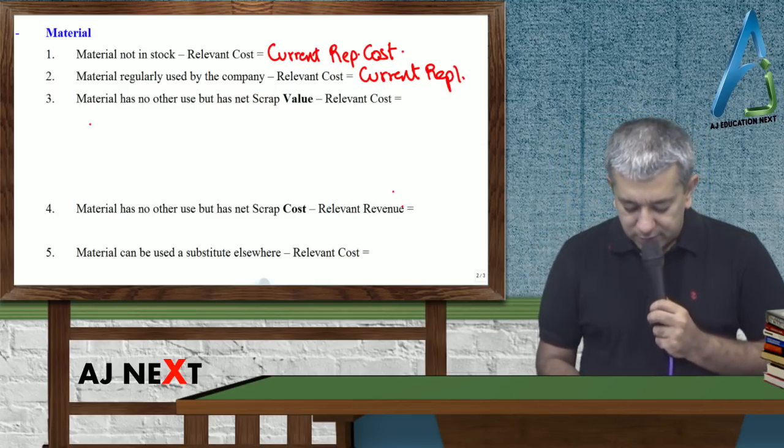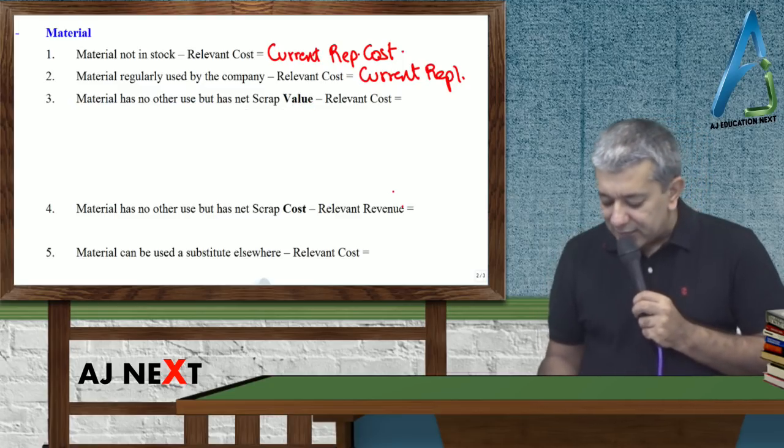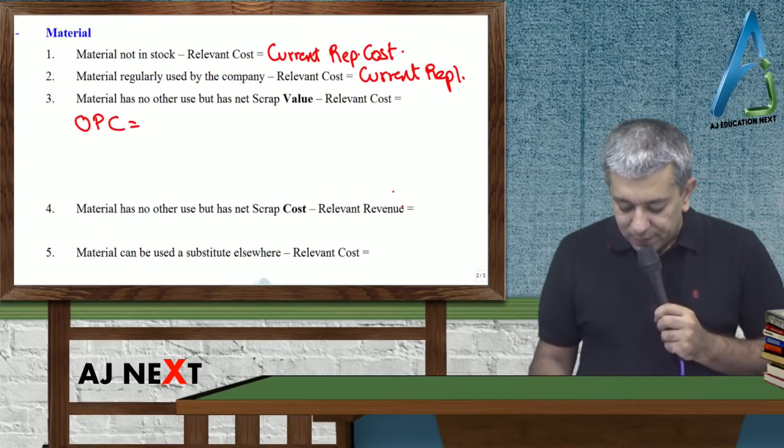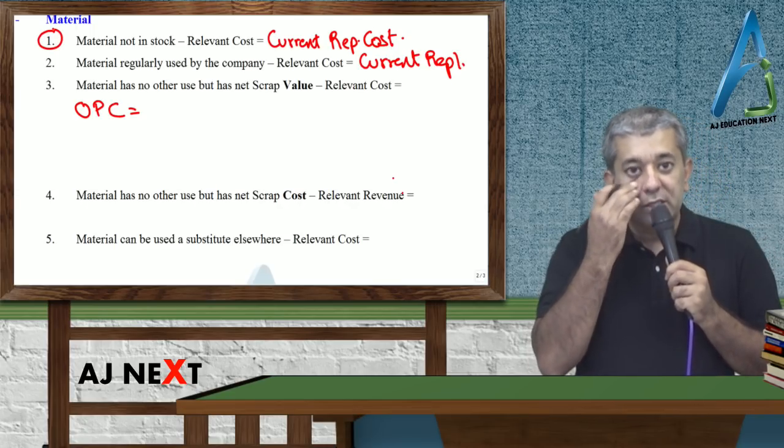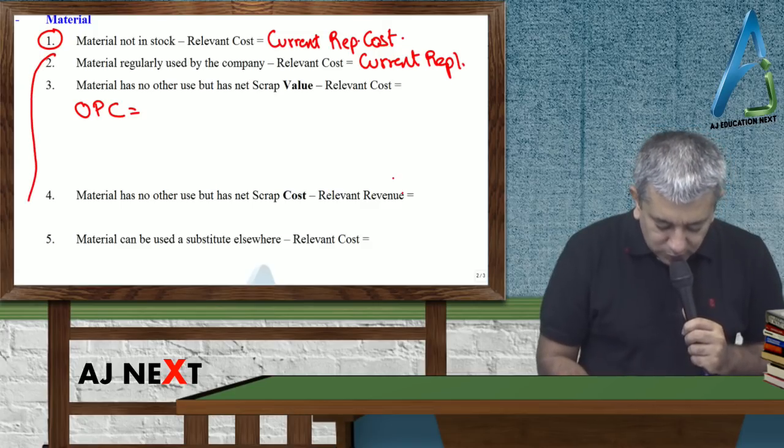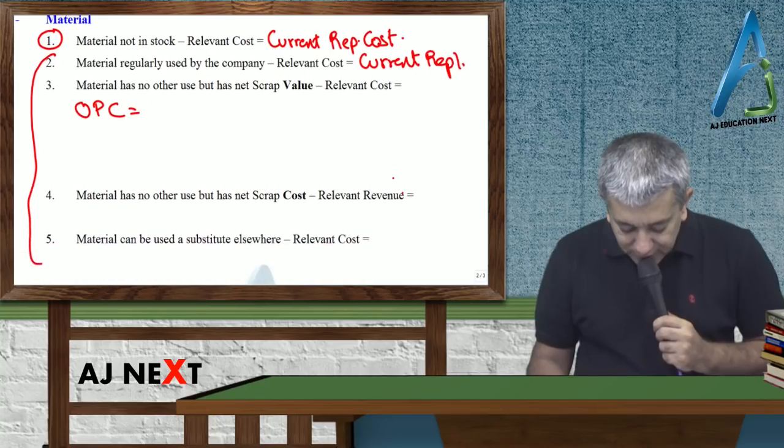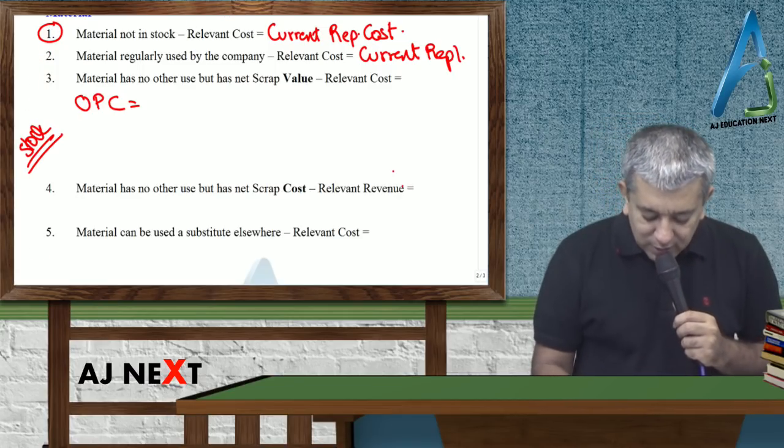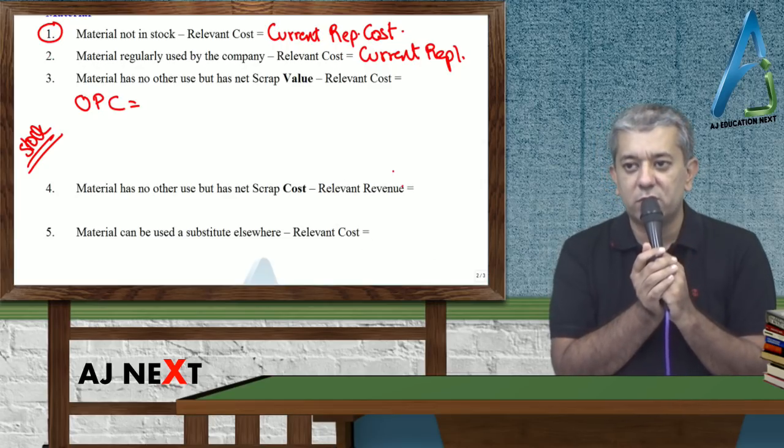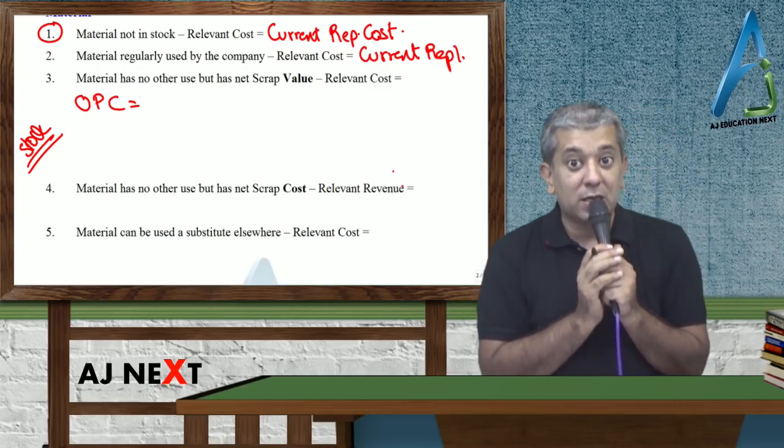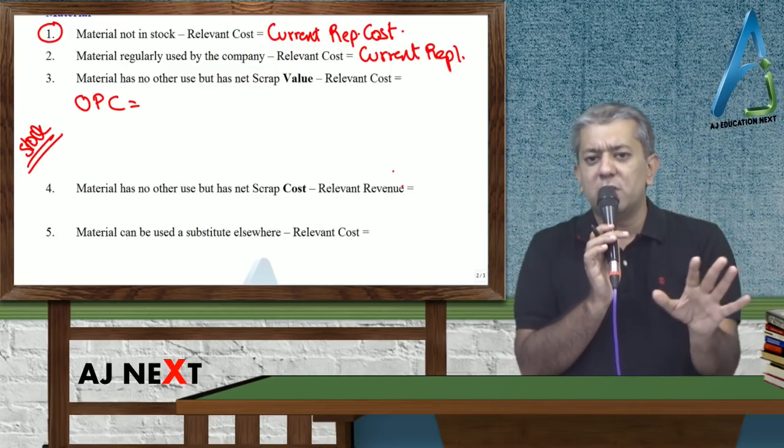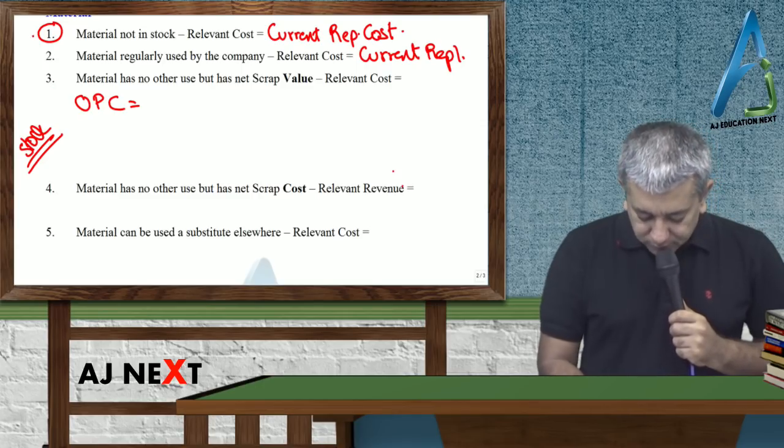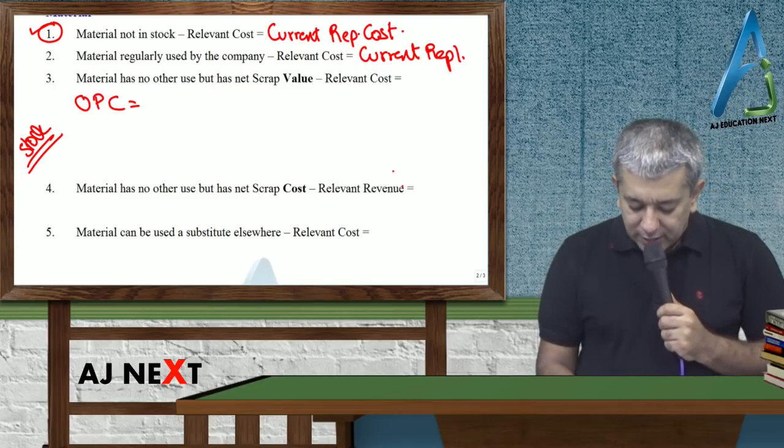Third, material has got no other use but has net scrap value. Now let me take some numbers. I'll give you three data points: original purchase cost. Before that, a small thing to remember - part number one is when material is not in stock. The next cases, up to the sixth case, are all about if I have material in stock. If material is in stock, the textbook will always give you one extra data - when the material was purchased, at what price was it purchased. Remember, that data will always be useless, just read it, because that is a sunk cost - a cost you have already incurred.